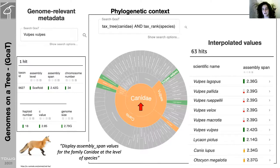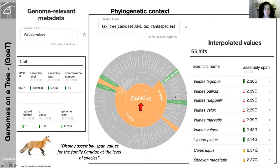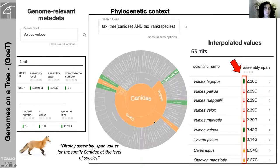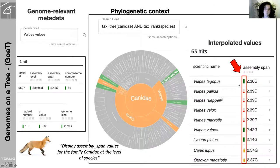An important aspect of the database is that GOAT stores metadata in a phylogenetic context. There are values and estimates for all attributes at all taxonomic ranks. For example, we can search assembly span values for species in the family Canidae, displayed here for species, but GOAT will also estimate values for genera and for the family. Values for selected attributes are displayed beside a color tag — a bar that indicates whether the value is a direct measurement shown in green, or an estimate based on phylogenetically guided interpolation, shown in red or orange, with filled or unfilled bars.